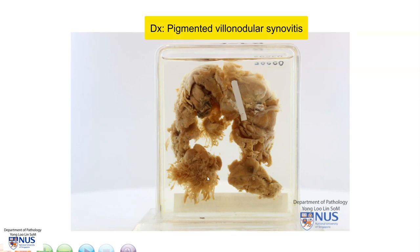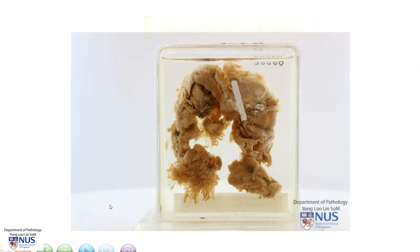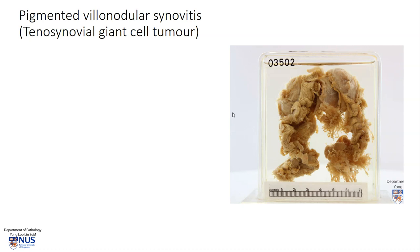In the fresher specimen, this color of the synovial tissue may actually appear a bit more brownish or even yellow because of lipids. So here we just saw an example of pigmented villonodular synovitis, and this is one of the subtypes of tenosynovial giant cell tumor.